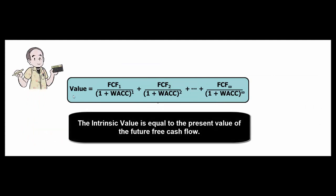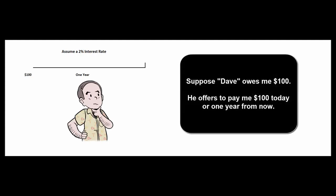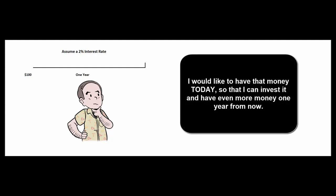The value, the intrinsic value of the company, is the present value of the future free cash flows discounted at the weighted average cost of capital. In other words, the present value of future cash flows. But what do we mean by present value? Let me tell you a story. Suppose my ex-brother-in-law owes me $100, and he comes to me and says, I can either give you that $100 today or a year from now. Which would you prefer? Well, even if I know he's going to have that $100 a year from now, I would like to have that money today so that I can invest it. Assuming I can invest it at 2% rate, a year from now I'll have $102.